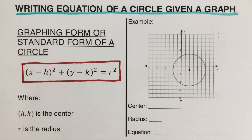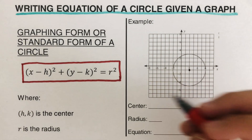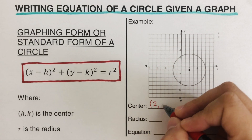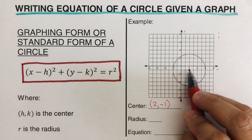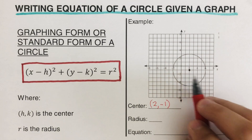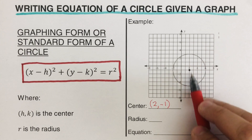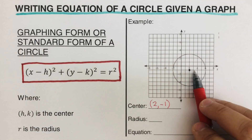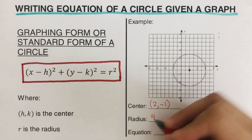First, we're going to determine the center of this circle. The center is at (2, -1) — right there. Then the radius: we can count in any direction — left, right, up, or down — it doesn't matter. Counting outward: one, two, three, four. The radius is the equidistant measure from the center to the edge of the circle, so the radius is 4.